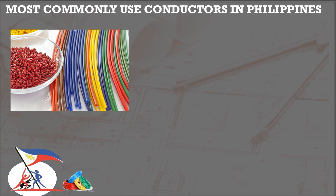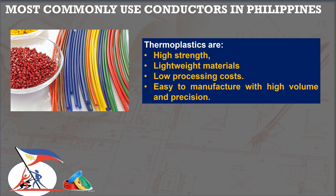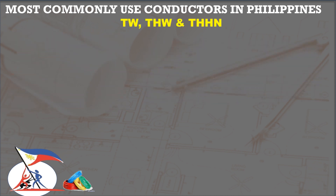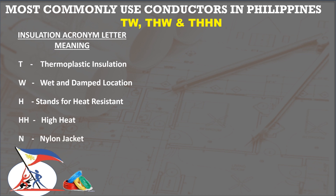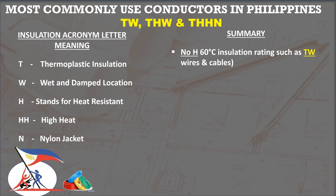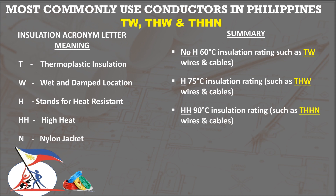In the Philippines, thermoplastic insulation is commonly used due to its high strength, lightweight material, and relatively low processing cost. These are TW, THW, and THHN, where T is for thermoplastic, W is for wet or damp location, H is for heat resistance, double H is for high heat, and N is nylon. If there is no H, such as TW, the temperature rating of insulation is 75 degrees Celsius, while HH has an insulation temperature of 90 degrees Celsius, and when an insulation has dash-2, this is also 90 degrees insulation.